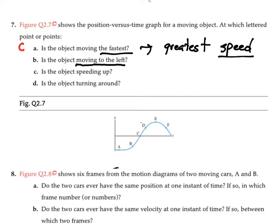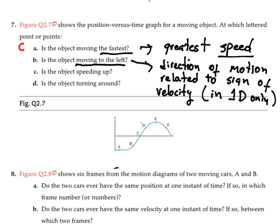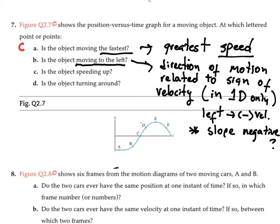The second question asks at which point is the object moving to the left. We need to remember that in one-dimensional motion, the direction of motion is related to the sign of the velocity — when velocity is positive the object moves right, when negative it moves left. So we're looking for a point where the slope is negative, where the graph is sloping down. Point A has no slope, B and C have positive slopes, D also has positive slope, E has no slope, and F is the only point with a negative slope. So at point F the object is moving to the left.